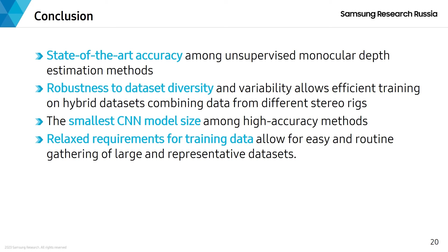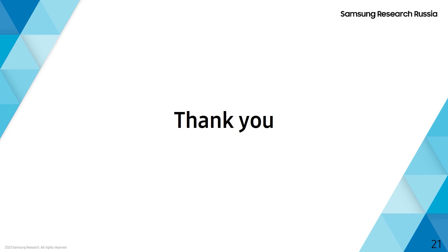This was made possible due to robustness to dataset diversity and variability, which allows efficient training on hybrid datasets combining data from different stereo rigs. We have the smallest CNN model size among high-accuracy methods, while relaxed requirements for training data allow for easy and routine gathering of large and representative datasets. Thank you all.